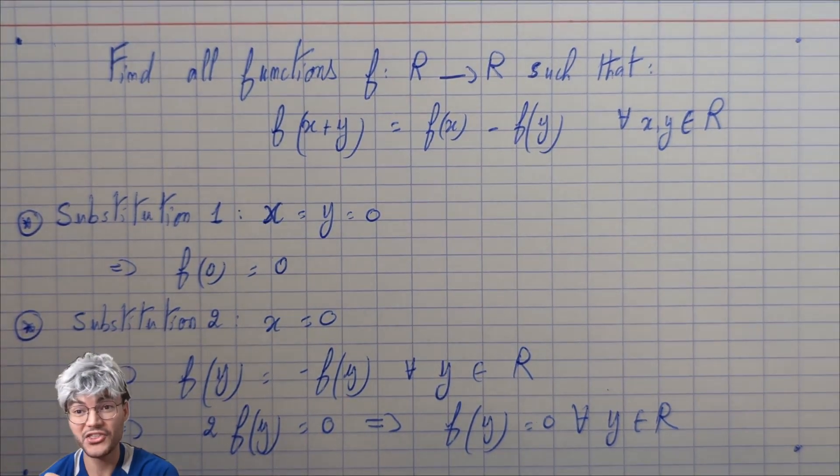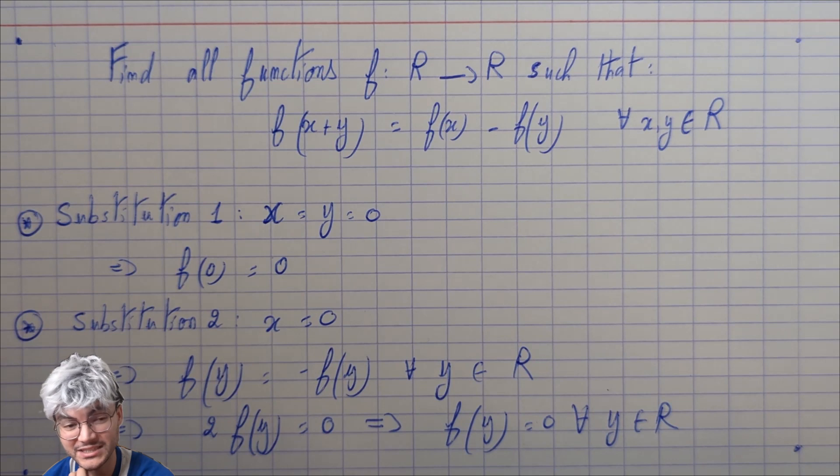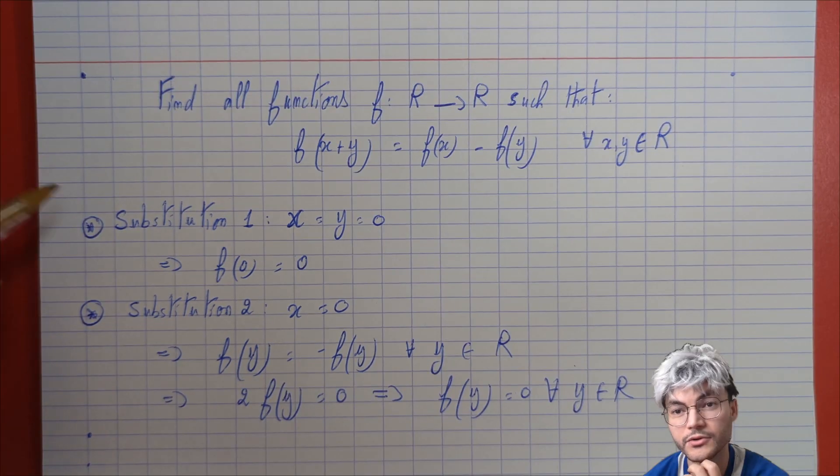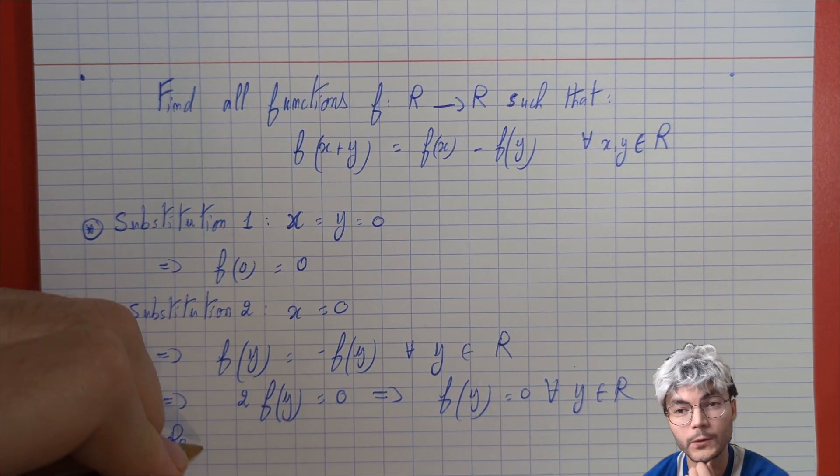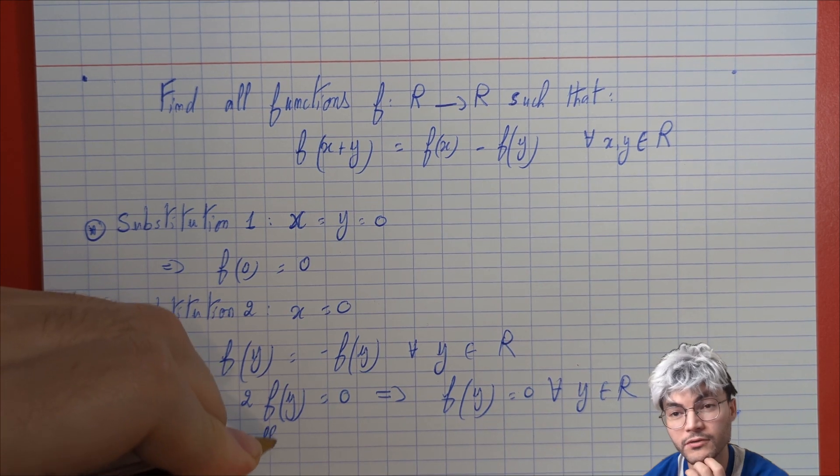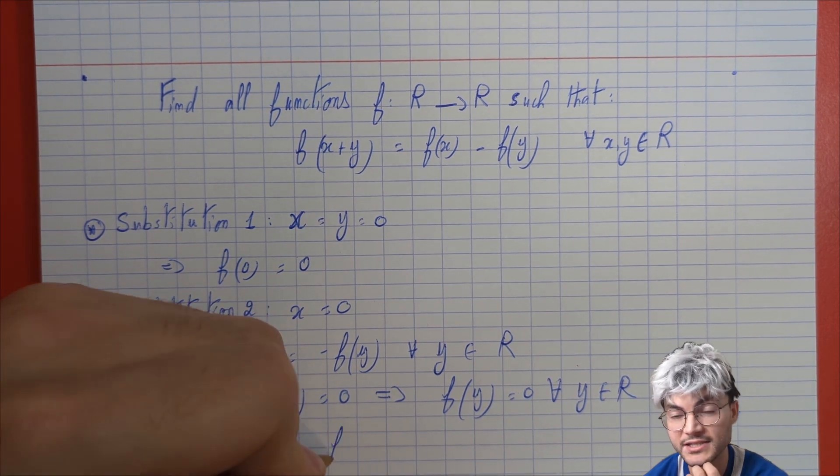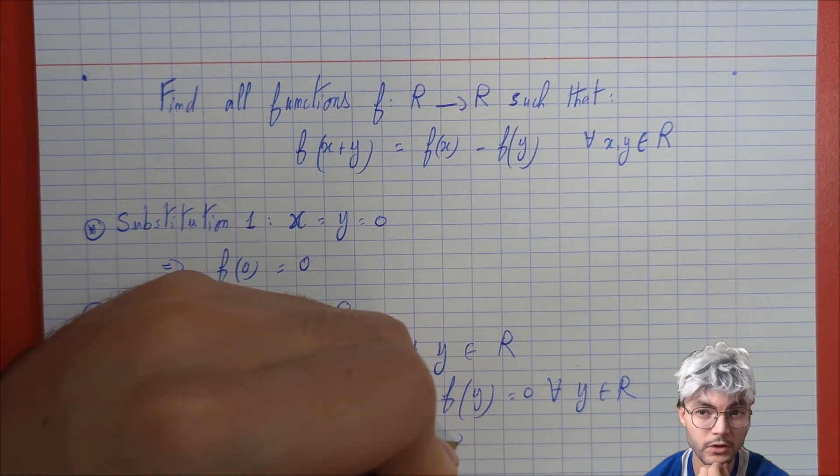We finished the exercise, or maybe not yet. We have to verify that our function verifies the first equation. So reciprocally we're going to substitute the value of the function that we found, which is the constant 0, and verify that it works.